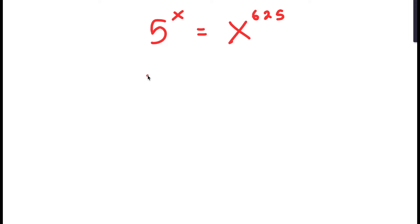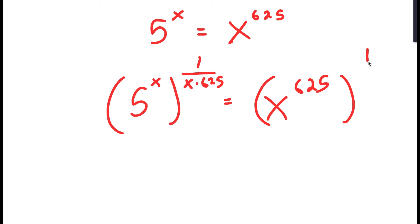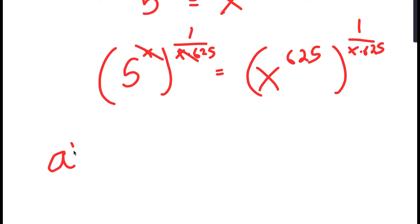So to solve this, I'm going to first take the power of 1 over x times 625 on both sides. For my left-hand side, x and x cancel out because if I have something in the form a to the power of m to the power of n, this is equal to a to the power of m times n.